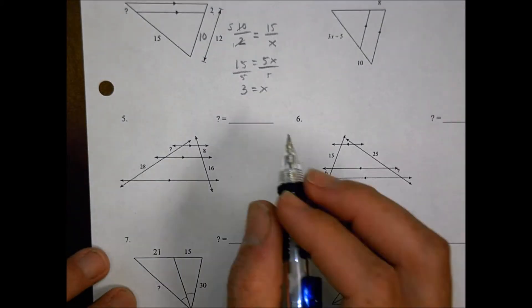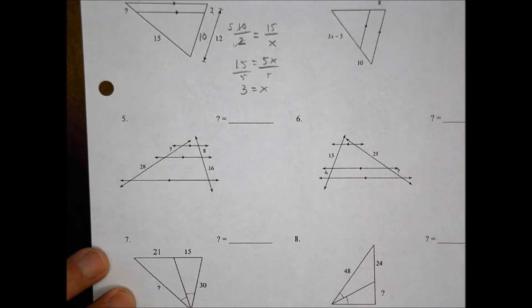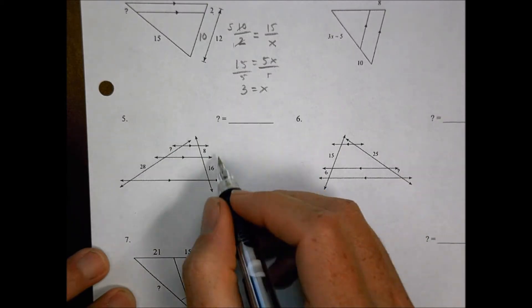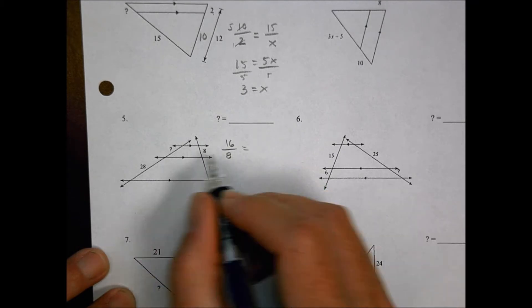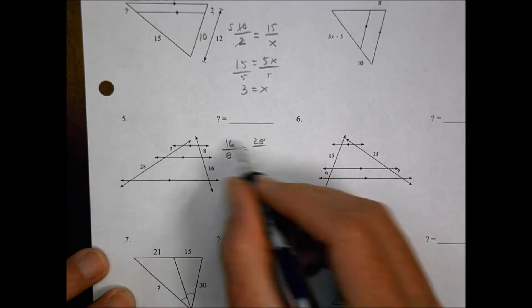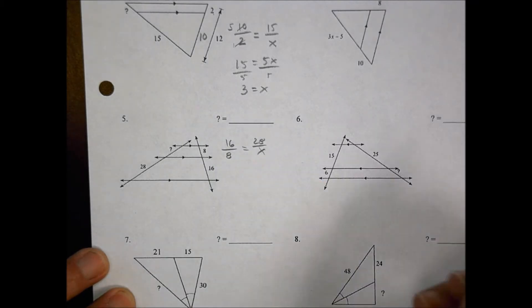Looking at number 5. This is an interesting one because I could set it up as a ratio thing again, no problem. I could do 16 over 8, make it equal to 28 over I don't know. That works out no problem.